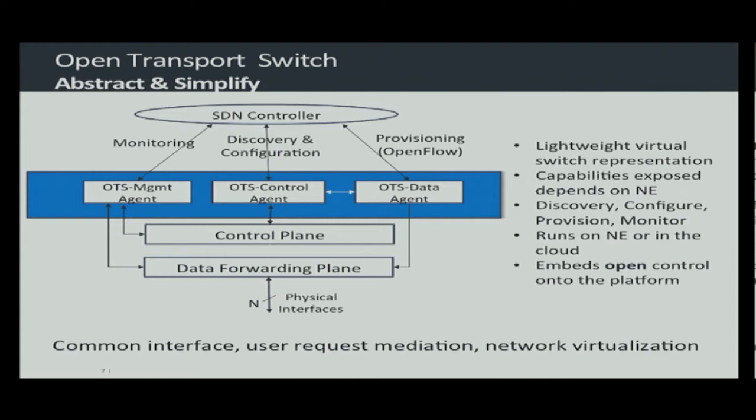A key aspect to bringing SDN into the transport network beyond the controller itself is an Open Transport Switch — a lightweight virtual switch abstraction of the switch that we call the Open Transport Switch. It abstracts the network element, simplifies it, and presents a more generic abstracted view to the SDN controller, covering topology discovery, connectivity, monitoring of services that are created, and provisioning through OpenFlow.